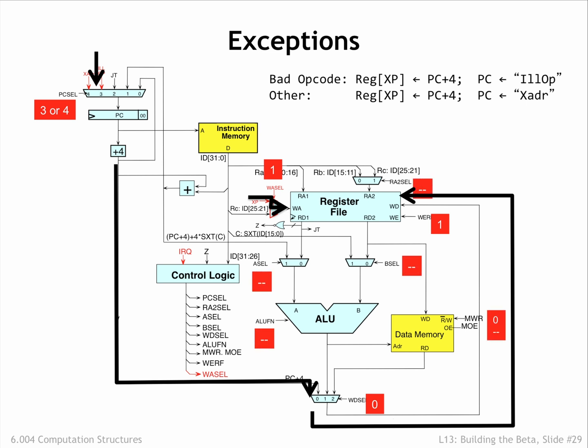The remaining control signals are forced to their don't-care values, since we no longer care about completing the execution of the instruction we had fetched from main memory at the beginning of the cycle. Note that the interrupted instruction has not been executed, so if the exception handler wishes to execute the interrupted instruction, it will have to subtract 4 from the value in the XP register before performing a jump XP to resume execution of the interrupted program.